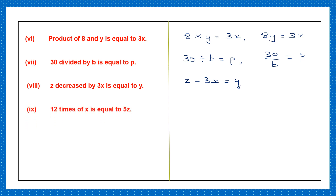Question 9: 12 times of x — 'times' means multiplication — is equal to 5z. Or we can also write this as 12x is equal to 5z.